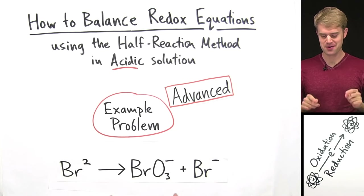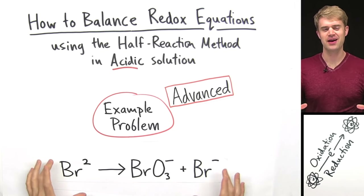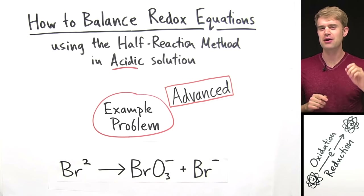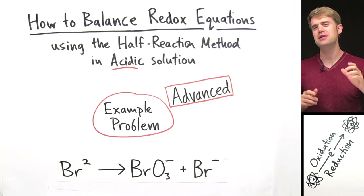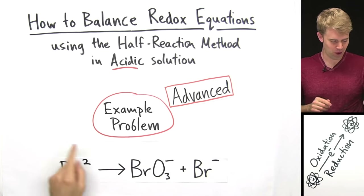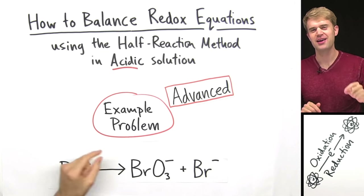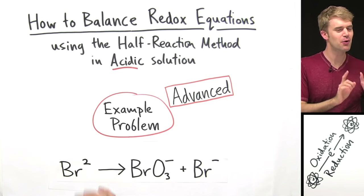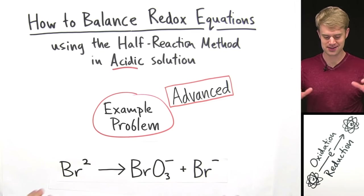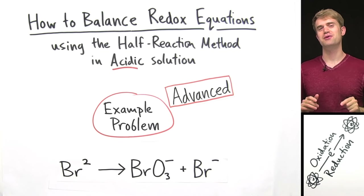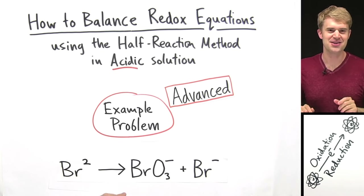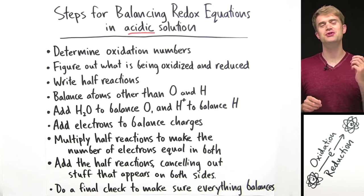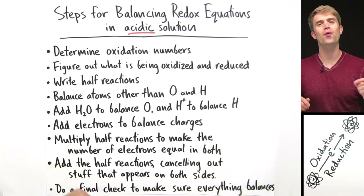Here's another practice problem. We are going to be balancing the equation here. This example is more advanced than the previous ones, but it represents a really common type of question where we have one compound that is both getting oxidized and reduced at the same time. If you work through this problem with me, you'll be well on your way to being a redox balancing ninja. Even though this problem is more advanced, we're still just going to use the steps that we always use.